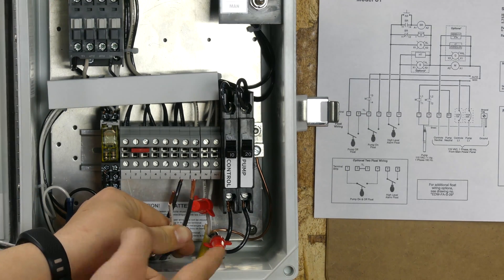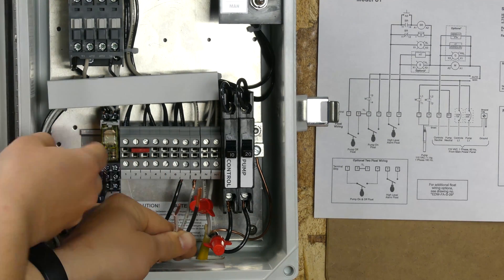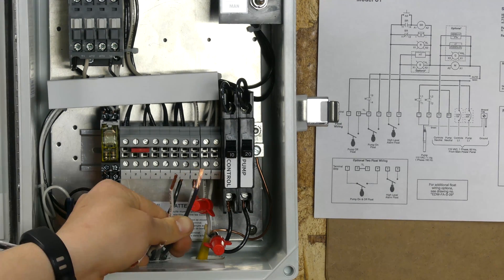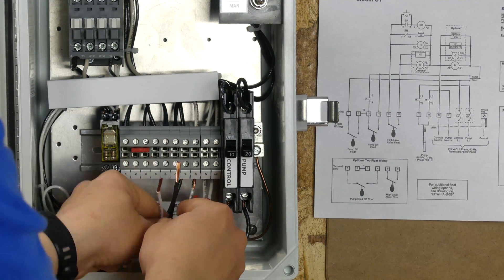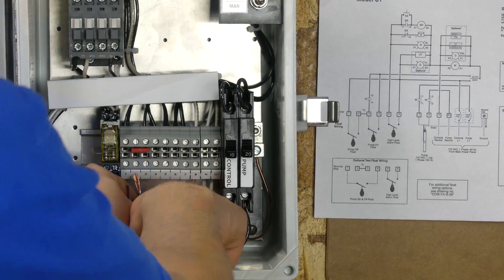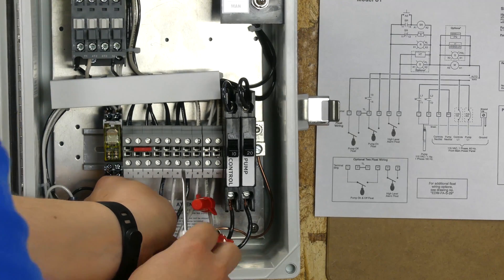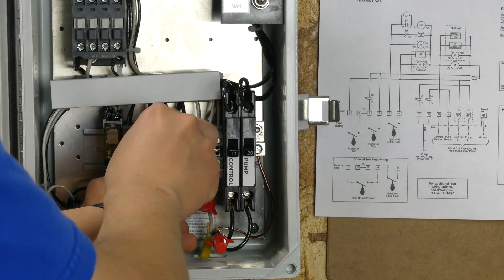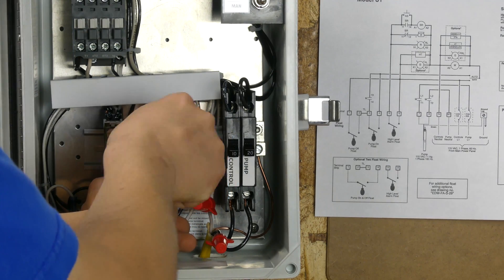Just a reminder, the first float we're going to be hooking up to six and five is going to be our highest float. This would be our alarm float. When you're inserting these wires, you want to be sure to push them all the way up until they just don't go up any farther.